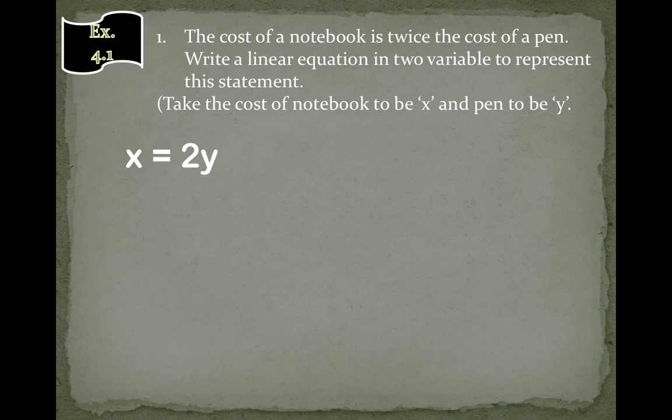So whenever we create linear equation in two variables, we need to keep two things in mind. One, that the right hand side of equal to should be 0. And second thing, if that is not 0, then left hand side and right hand side should both be equal.